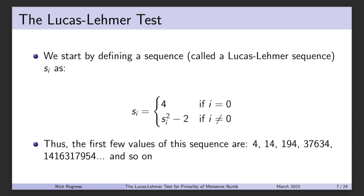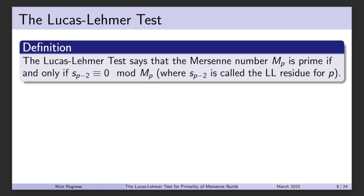Now we can define the actual Lucas-Lehmer test. The Mersenne number M_p is prime if and only if the (p minus 2)nd term of the Lucas-Lehmer sequence is congruent to 0 mod M_p. We call s of (p minus 2) the Lucas-Lehmer residue for p.